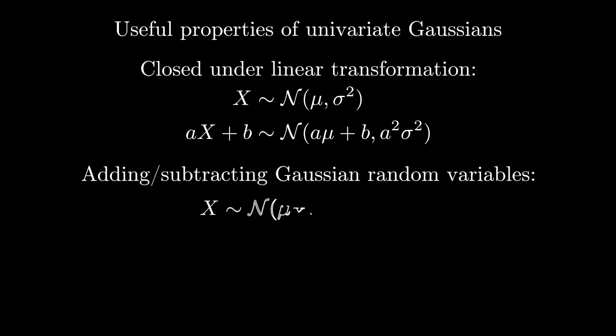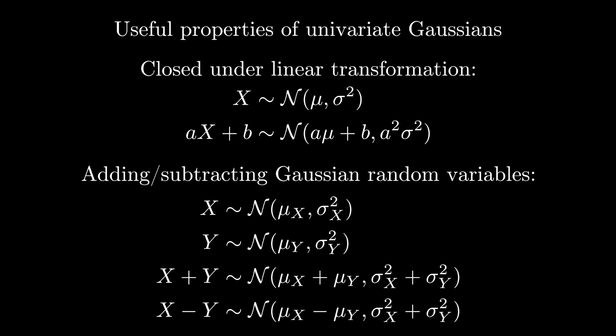Another remarkable fact is that if I take two independent Gaussian random variables and add them together, then I get a new random variable that is also Gaussian. The mean of the sum is the sum of the means, and the variance of the sum is the sum of the variances. The difference between two Gaussian random variables is also Gaussian. The mean of the difference is the difference of the means, but the variances add.